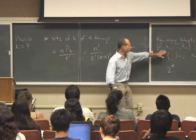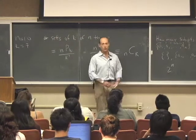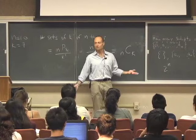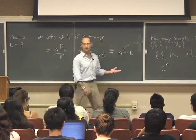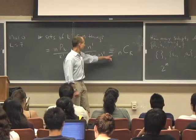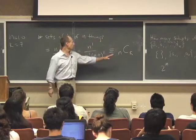How many ways are there of picking n of these n things? Just one. You've got to take them all. You don't have any choice. There's only one way to do that. So n choose n ought to be 1 as well.